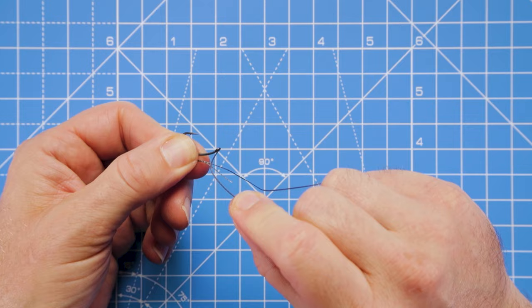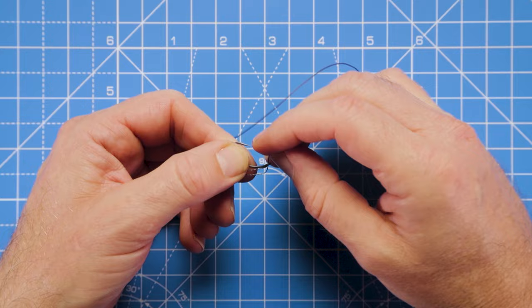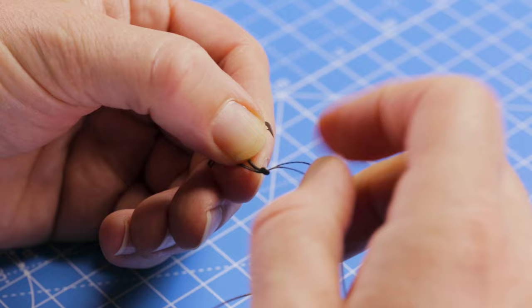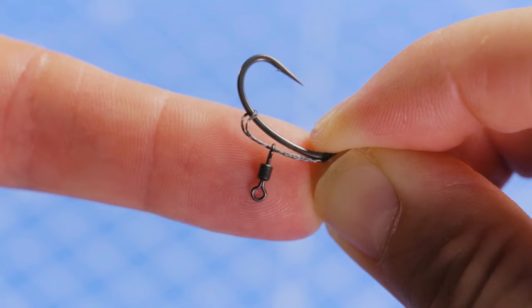So I've took the long section through first, then the shorter tag end, take that through as well, and just align everything up now to get the right length of D section that you want. I kind of want my D to begin around about opposite the barb of the hook like so.